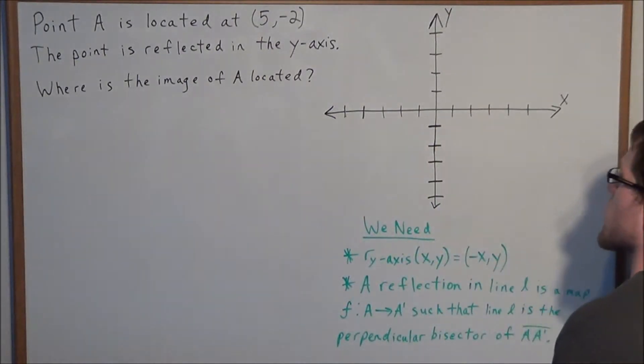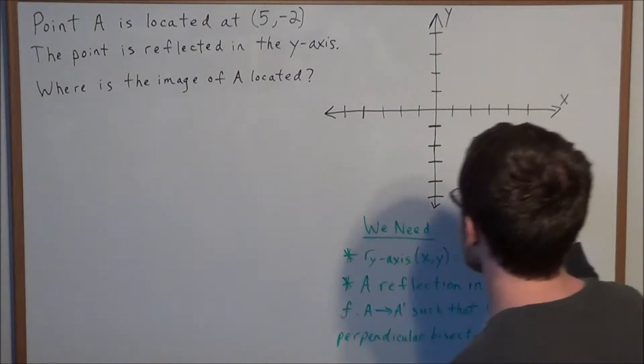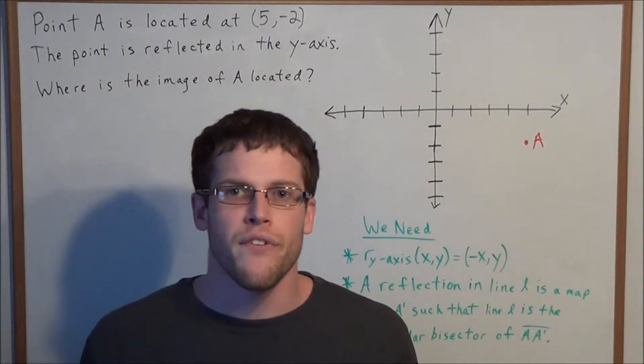So we can start by plotting the point 5, negative 2, and let's label this point A. And now the goal is to reflect A in the y-axis and find its coordinates.